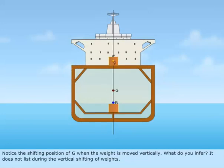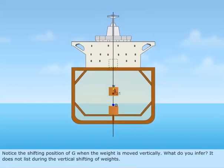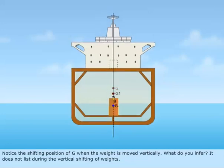Notice the shifting position of G when the weight is moved vertically. What do you infer? It does not list during the vertical shifting of weights.